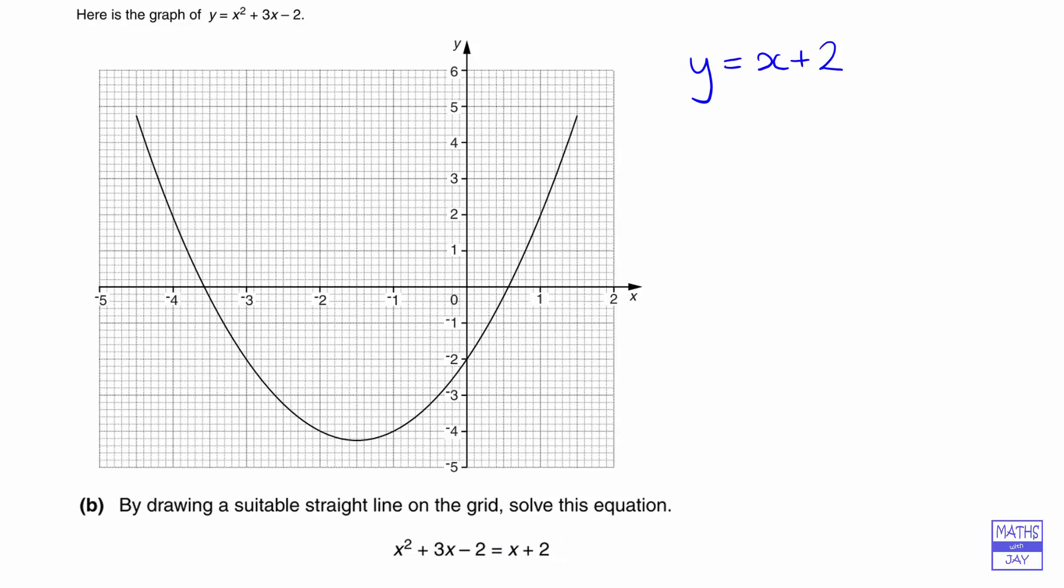So what you could do is a table of values. Because we can see that the two axes have not got the same scale, it's probably easier just to plot a few points. So often easier to start with positive values. Let's put in x is 2.